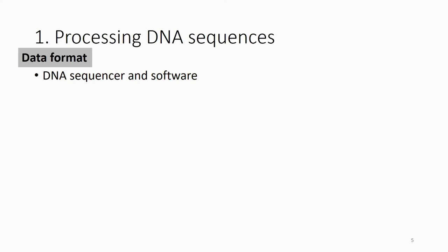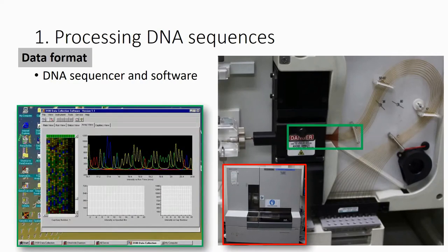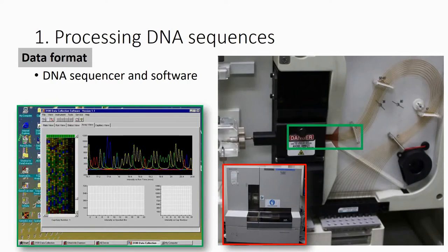The data format depends on the DNA sequencer — the machine used to read the A, T, C, G of your PCR product. It also depends on the software used to extract the raw data and analyze and interpret the results. If you're using the di-terminator single sequencing approach, you'll get a particular kind of result, with different peaks showing different nucleotide types.